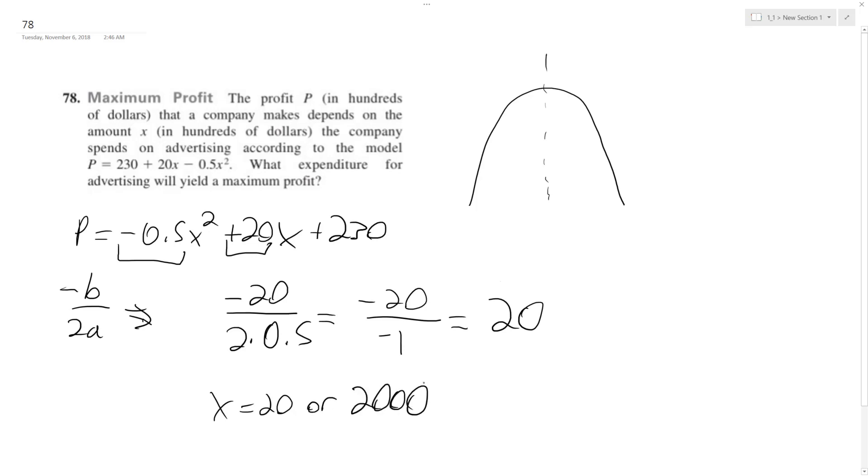2000. That's 20 hundreds, two thousand dollars, but I would just go with 20 hundreds.